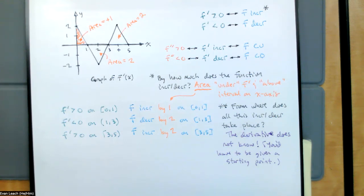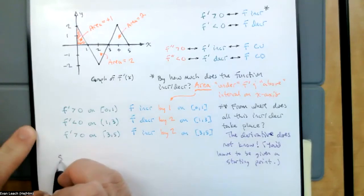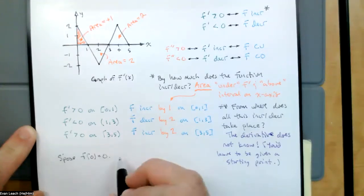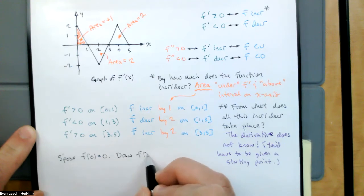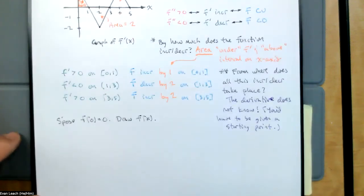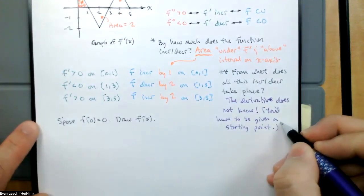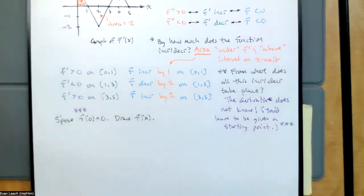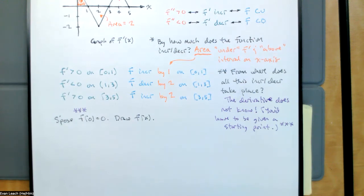So for example, suppose f of 0 is equal to zero — draw the graph of the function. I have to give you that piece of information. This is what it would look like for me to give you that information: I'll say here is a starting point, f of 0 is equal to 0. Now we can draw the function.